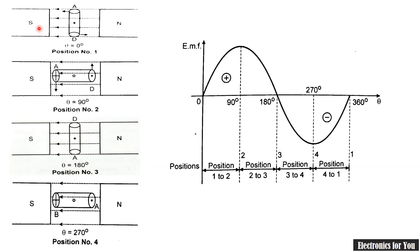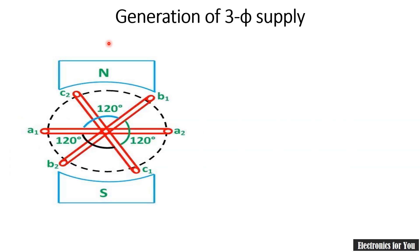What will happen if we rotate three different coils in the magnetic field? Definitely it will generate three phase supply. Generation of three phase supply is possible if three conductors, A1, B1 and C1, are 120 degrees apart from each other and if they are rotated in a magnetic field, a three phase supply can be generated.